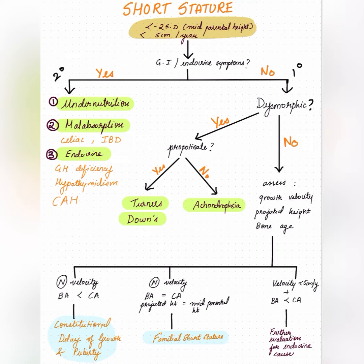For primary short stature, first assess whether any dysmorphic features are present. If yes, determine if the short stature is proportionate — meaning the arms, legs, trunk, and head are all proportionately short with no discrepancy in limb length. If proportionate, causes include Turner syndrome or Down syndrome. If disproportionate, the most common cause is achondroplasia.